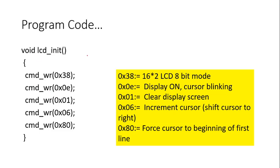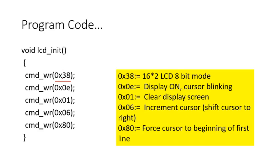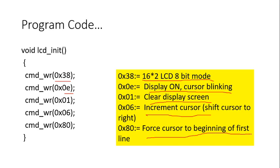For initialization, we are going to use five commands. First, send 38 — this selects 16 by 2 LCD 8-bit mode. Next is 0E — display on, cursor blinking. Then 01 — clear display screen. 06 — increment cursor, shift cursor to the right. 80 — force cursor to the beginning of the first line. These five commands are compulsorily given for the initialization of the LCD. We have made a separate initialization function which we will call in the main program.